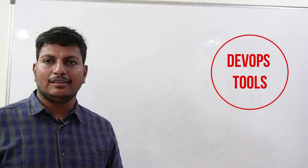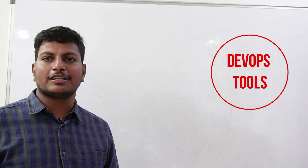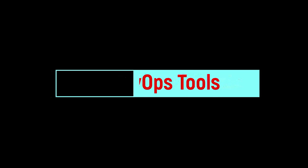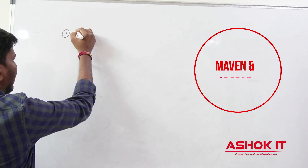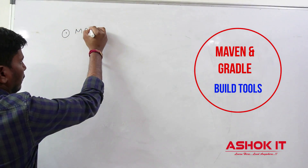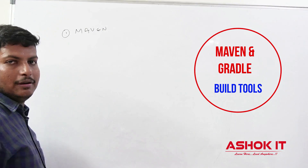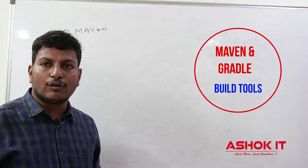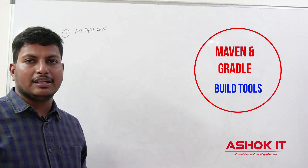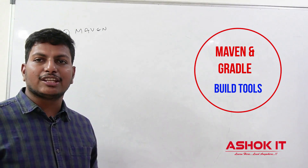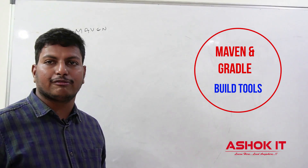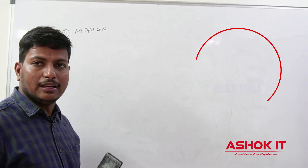We are going to understand what are the DevOps tools and what is the purpose of each tool. Let's get started. First one, Maven. Maven we will call as a build tool. Maven is used to automate the build process of our application — like downloading the dependencies of the project, compiling the source code, executing unit test cases, and packaging the project as a JAR file or WAR file. Those tasks can be automated by using Maven.